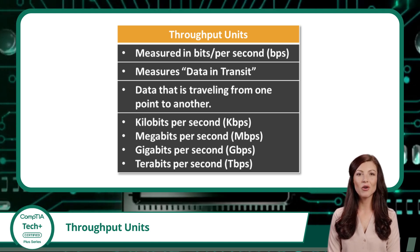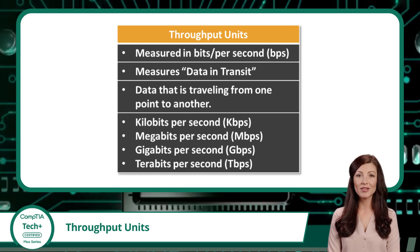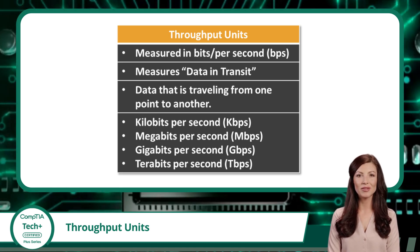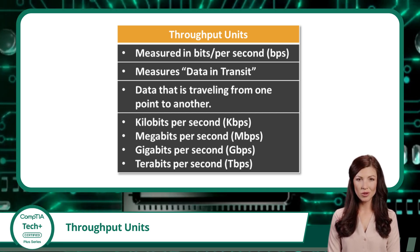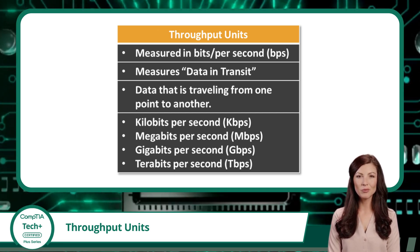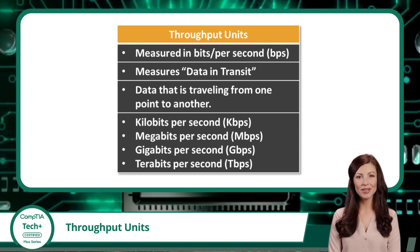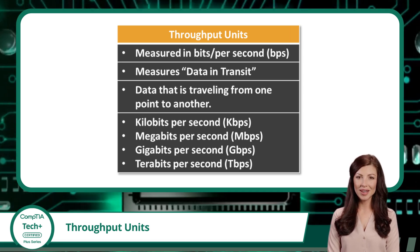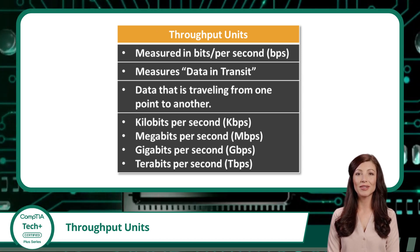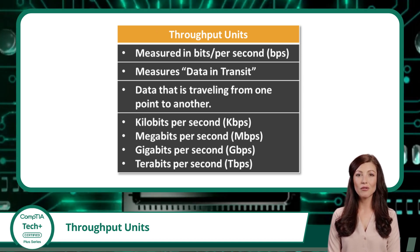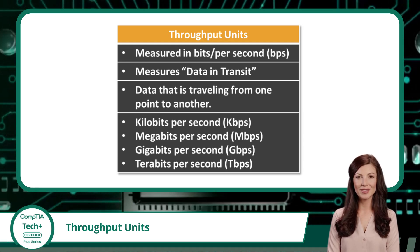Some relevant throughput unit quantities are kilobits per second, which are quantities measured in thousands of bits per second. This is a relatively low throughput rate for modern computing. We also have megabits per second, which are quantities measured in millions of bits per second. Throughput rates in this range are common for internet connections in rural areas using slightly outdated technologies, where throughput rates are limited as a cost-saving measure, or where limited network infrastructure exists.